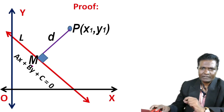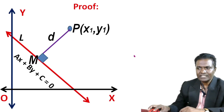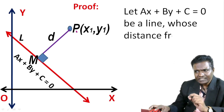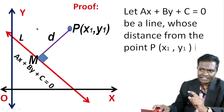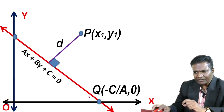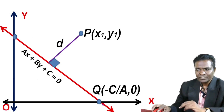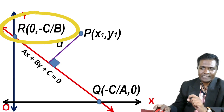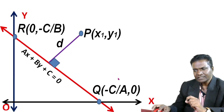We are interested in finding the length of PM. Let ax plus by plus c equal to 0 be the line whose distance from the point P(x1, y1) is d. Let the x-intercept be Q where y equal to 0, so x equal to minus c by a. The y-intercept is R where x equal to 0, so y equal to minus c by b.